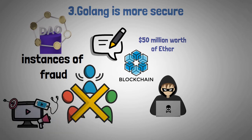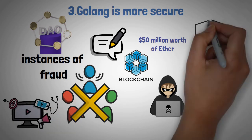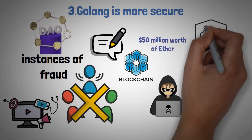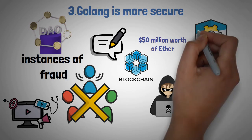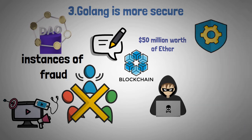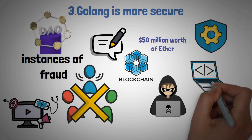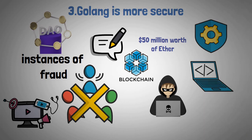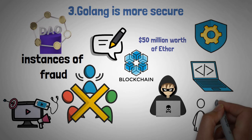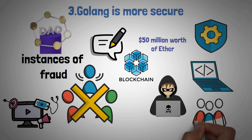Golang could make PulseChain highly secure, as it would be more difficult to hack. This is because when writing code in Golang, the programmer has to be very explicit about what they want the code to do. There is little room for ambiguity, which makes it much harder for hackers to find and exploit loopholes.